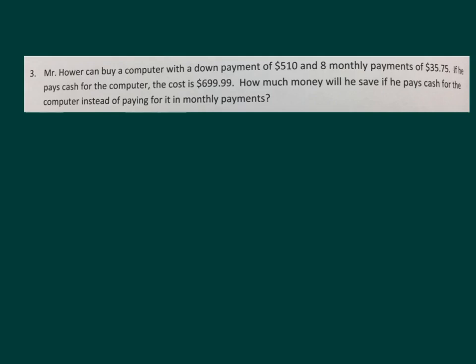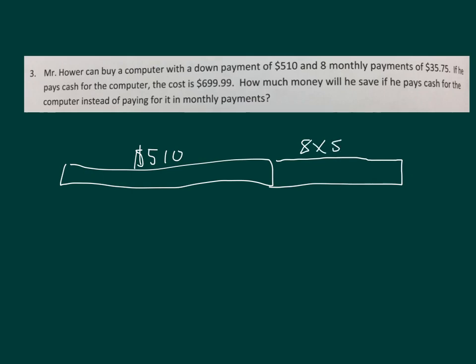Okay, let me help you set up this problem. Mr. Hauer can buy a computer with a down payment of $510 and 8 monthly payments of $35.75. So not only the $510, but also 8 monthly payments of $35.75. So we put that together, and we're going to compare it against him paying cash for the computer, which is $699.99. It says, how much money will you save if he pays cash for the computer, instead of paying for it with monthly payments? So, let's figure that out.